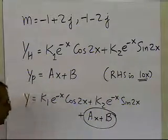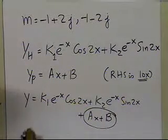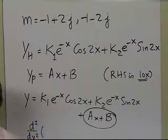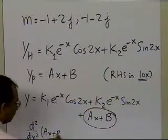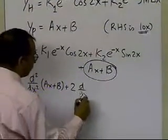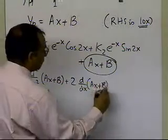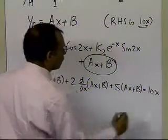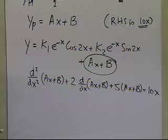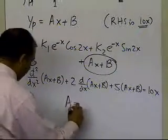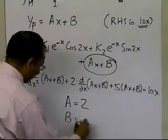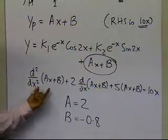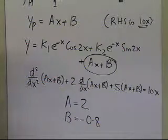To find ax plus b, you plug the particular part back into the differential equation: the second derivative of (ax + b) plus 2 times the derivative of (ax + b) plus 5 times (ax + b) equals 10x. Equating the coefficients of x and the constant terms, you get a equal to 2 and b equal to minus 0.8.